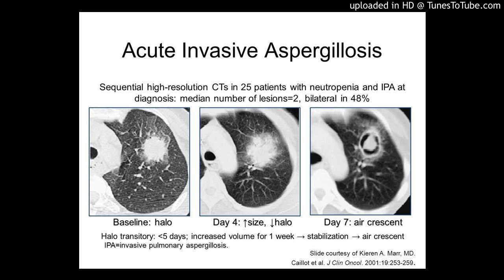The large conidial size, hot and humid environment, and constant exposure to high spore content are implicated in the pathogenesis of chronic invasive infections in a normal host due to Aspergillus flavus.